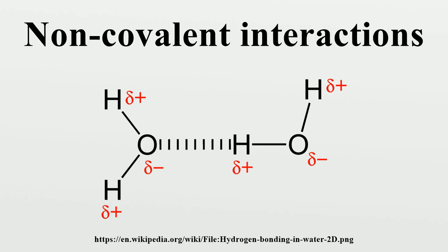Coulomb's law: Ionic-ionic interactions involve the attraction of ions or molecules with full permanent charges of opposite signs. For example, sodium fluoride involves the attraction of the positive charge on sodium with the negative charge on fluoride. These bonds are harder to break than covalent bonds because there is a strong electrostatic interaction between oppositely charged ions. However, this particular interaction is easily broken upon addition to water or other highly polar solvents.